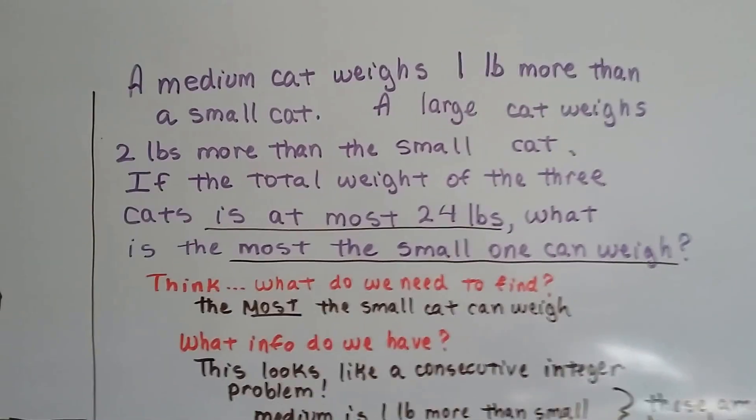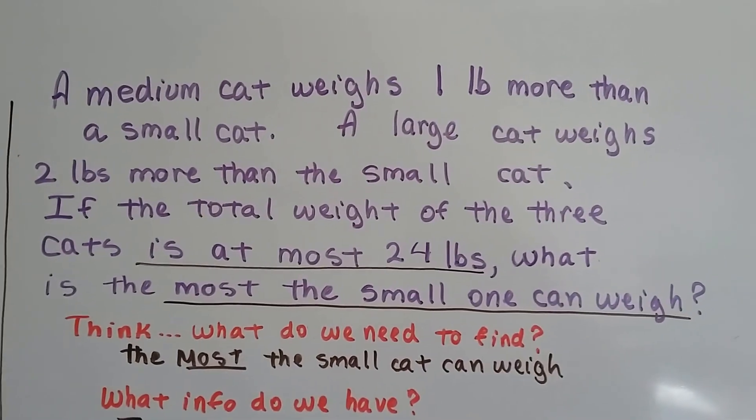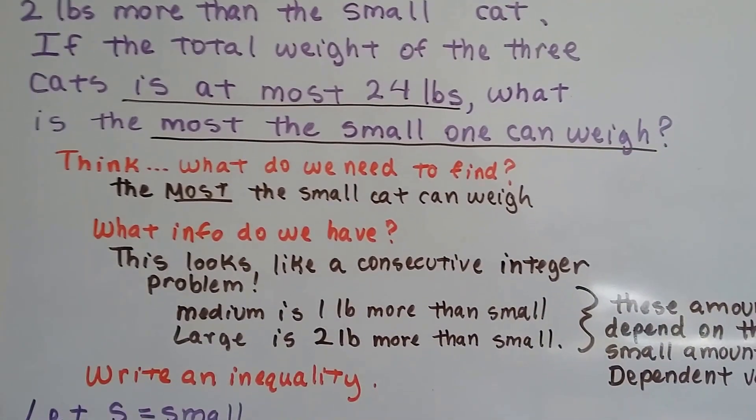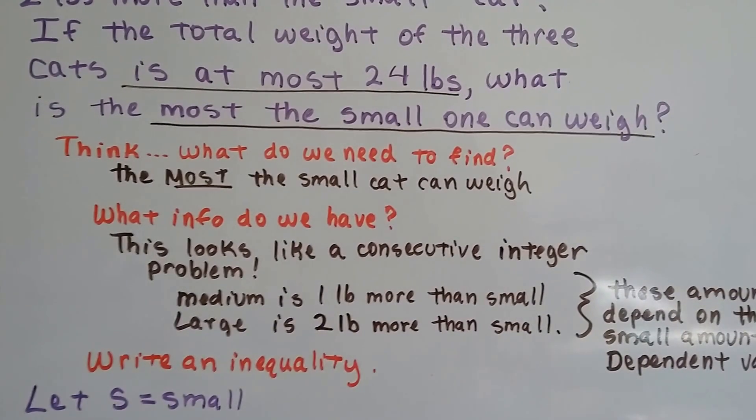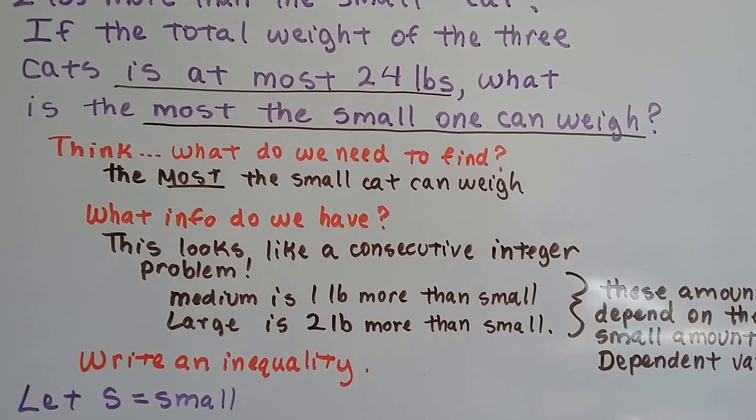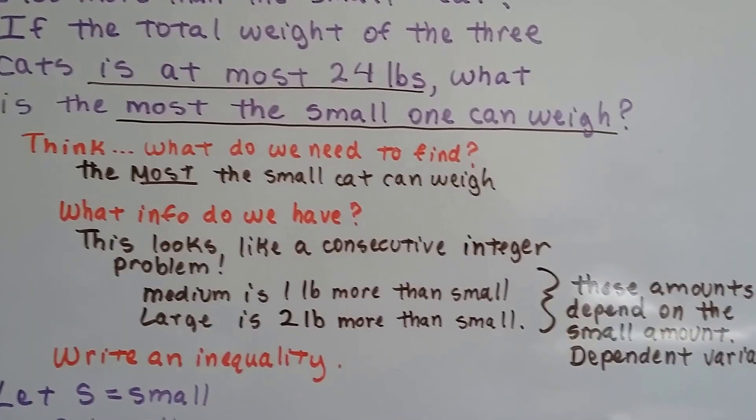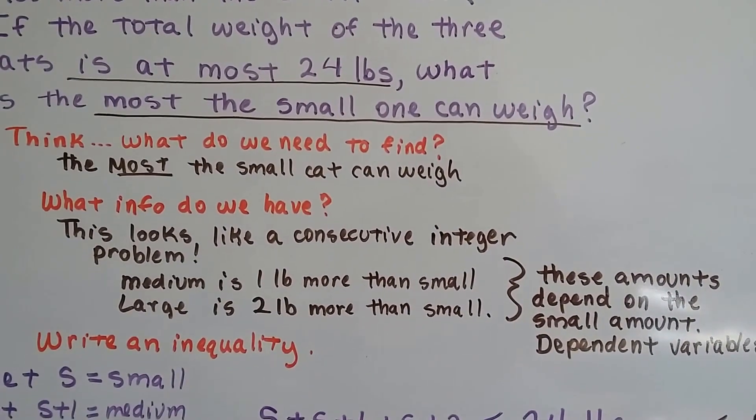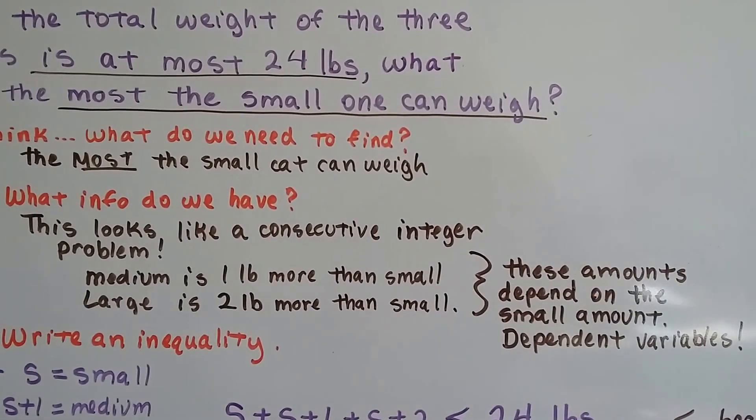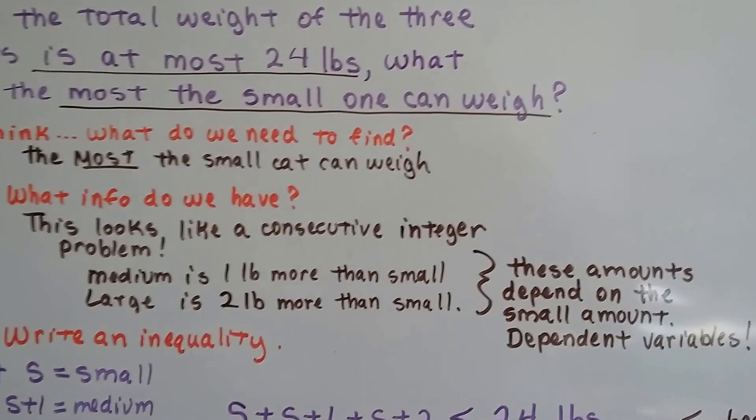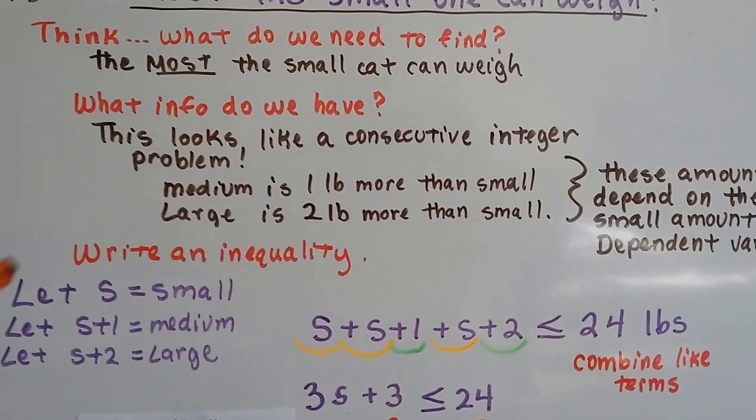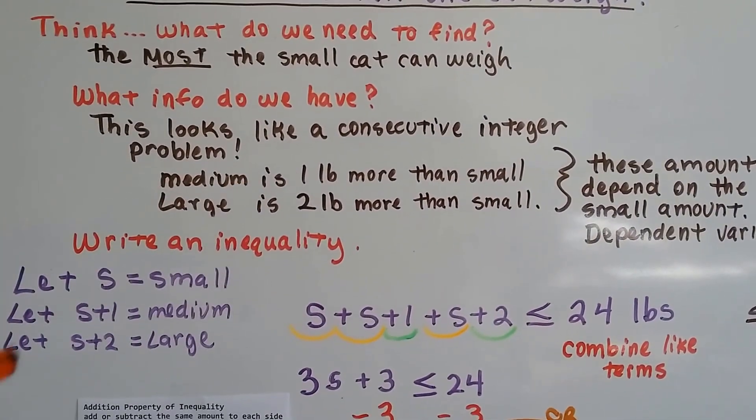Let's take a look at this one with cats. A medium cat weighs 1 pound more than a small cat. A large cat weighs 2 pounds more than the small cat. If the total weight of the 3 cats is at most 24 pounds, what's the most the small one can weigh? So we think, what do we need to find? The most the small cat can weigh. What info do we have? Well, this looks like a consecutive integer problem. The medium is 1 pound more than the small, and the large one is 2 pounds more than the small. These amounts depend on the small amount. They're dependent variables.